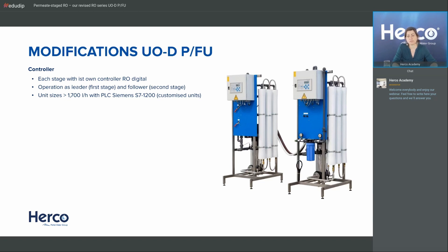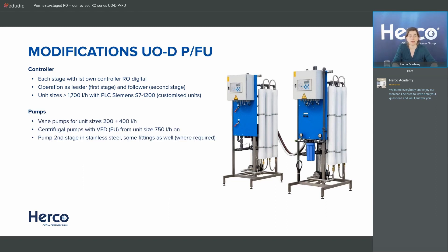For this reason, we have included only units up to 1700 liters per hour in the catalog; larger ones can be inquired directly with the sales team. Remember: the series doesn't stop at 1700 — we just haven't specified the larger sizes because they are always customized. Looking at the pumps: the smaller units with a cover are equipped with vane pumps, while the larger units are equipped with variable frequency drive pumps.